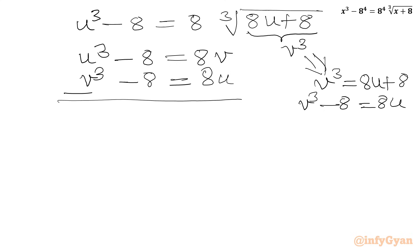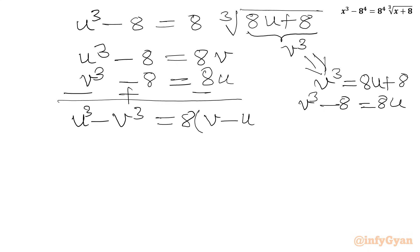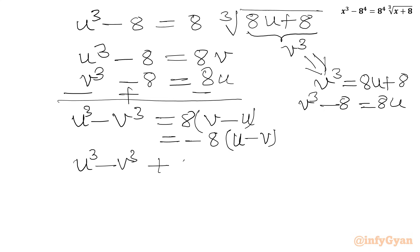Now I will subtract the second equation from the first one. So we get u³ - V³, and 8 - 8 cancels, equal to 8(V - u), which is the same as -8(u - V). Taking all terms to one side: u³ - V³ + 8(u - V) = 0.